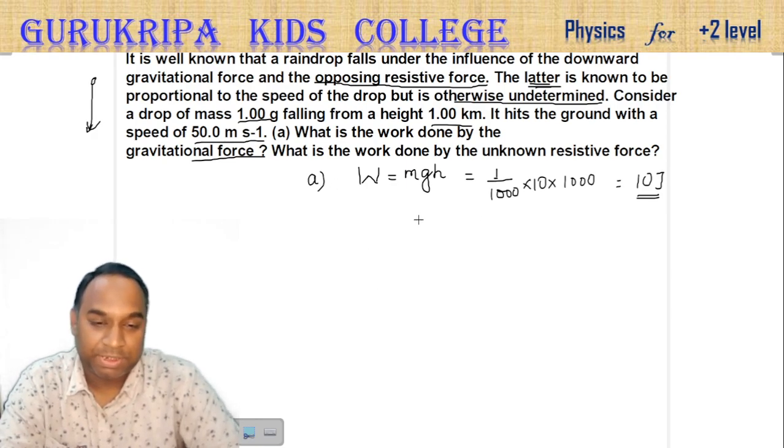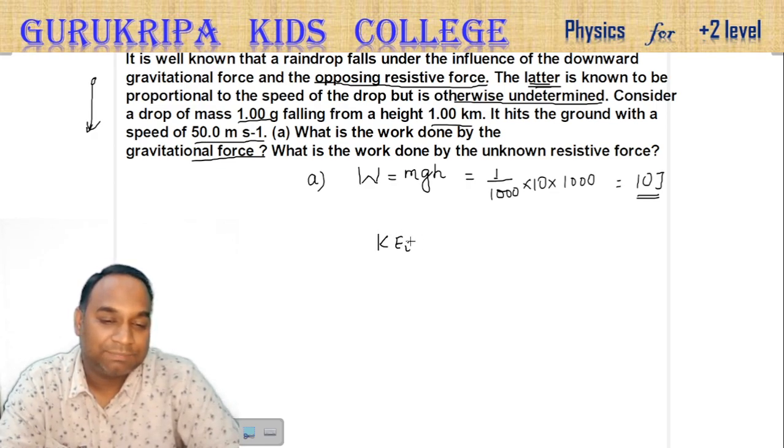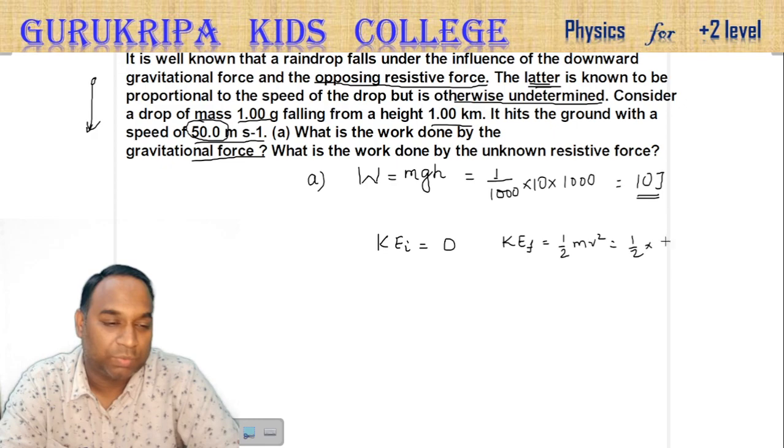This is kinetic energy. Part b. First, part a. Initial kinetic energy KE initial, KE final. KE final equals half m v squared, that is equal to one-half times one by one thousand times fifty squared, five by four.